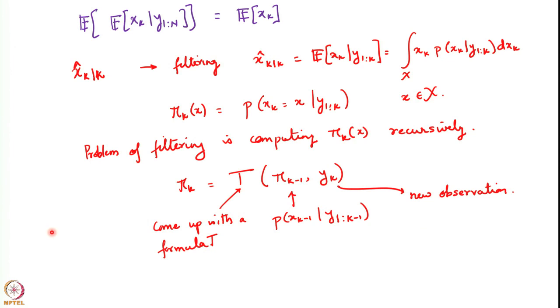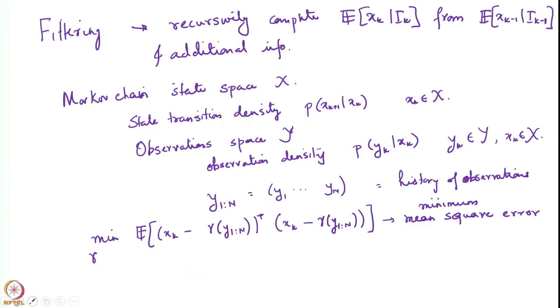Welcome everyone. In the previous lecture we had posed the problem of filtering. The state of a system denoted x_k, which we wanted to estimate using observations y_1 to y_k of the system. The state of the system evolved as a Markov chain, so x_{k+1} given x_k in this form. The observations y_k were received at each time k, whose density was given by p(y_k | x_k). Using the observations up until a certain time, denoted y_1 to y_n (observations from time 1 till time n), we had to use that to estimate x_k.